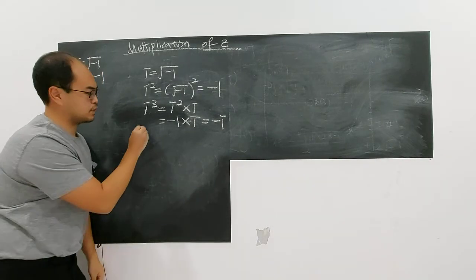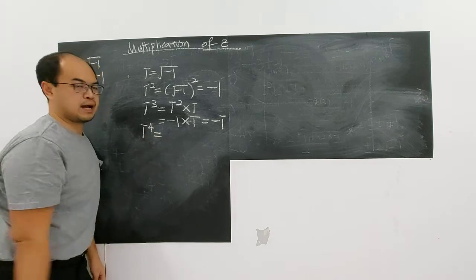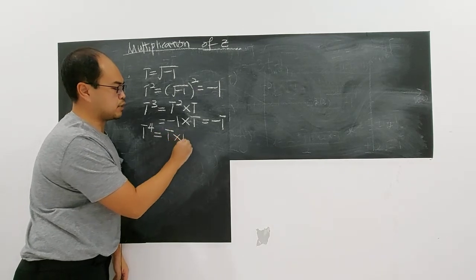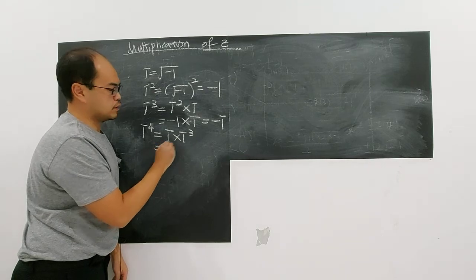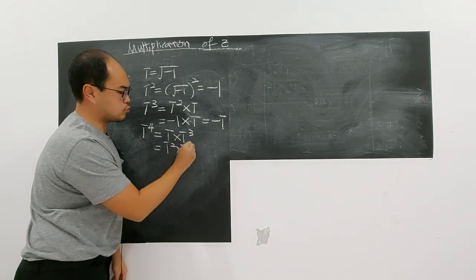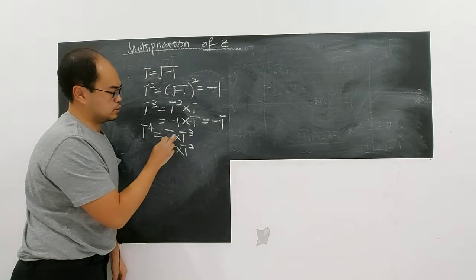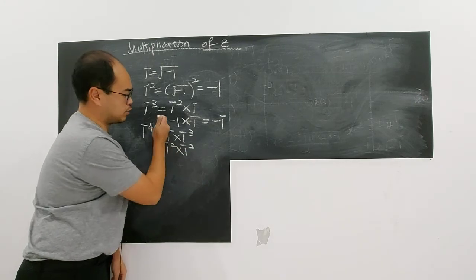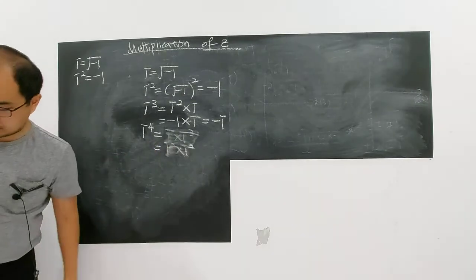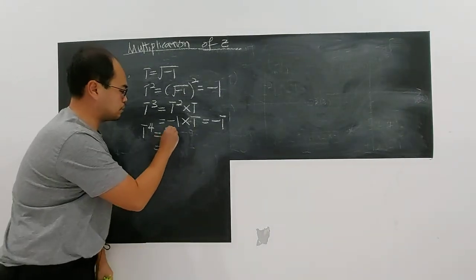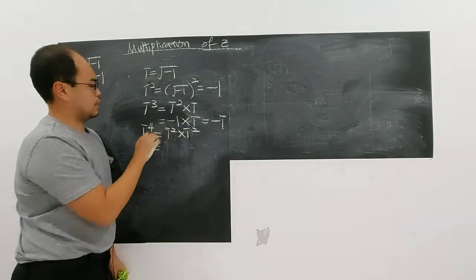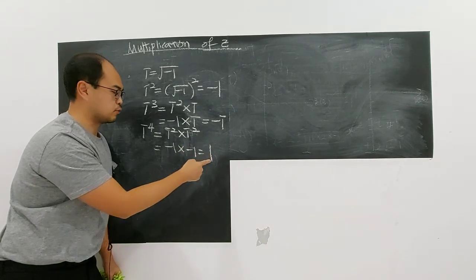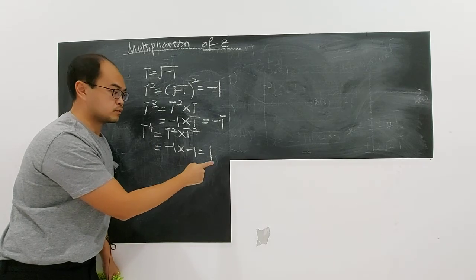Now, what is i to the power of four? i to the power of four — I can write it as i squared times i squared. i squared is negative one, so negative one times negative one gives positive one. So i to the power of four is one — a real number.